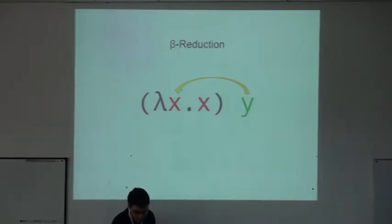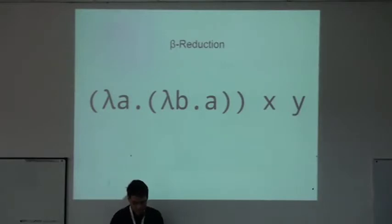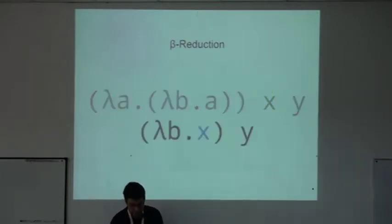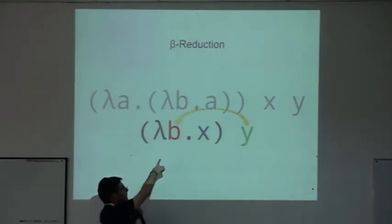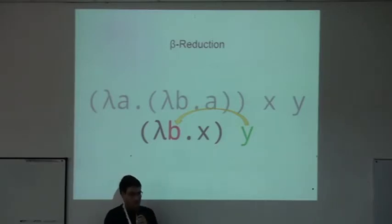Let's see another example. Here we first evaluate the outer function with x, binding x to a and replacing all occurrences of a in the body of the function. That leaves us with a new expression. Then we evaluate it passing y, binding y to the b parameter and replacing all occurrences of b in the body of the function. But there are no b's in the body, so the result is simply x.